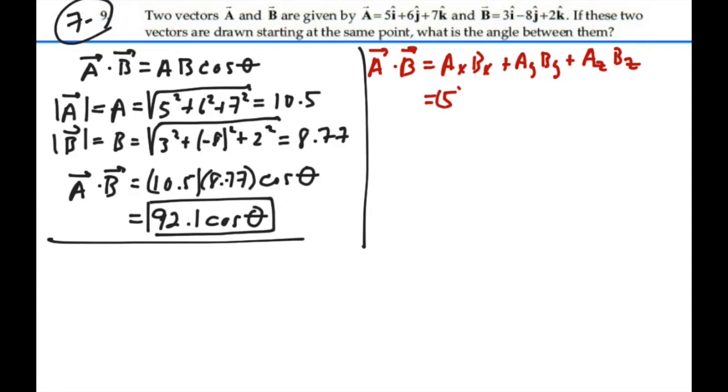So in this case, this would be five times three plus six times a negative eight plus seven times two. So this scalar product would be equal to fifteen minus forty-eight plus fourteen. That would be twenty-nine minus forty-eight, and that gives us a negative nineteen.